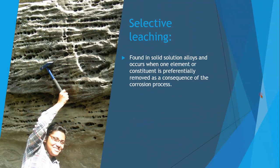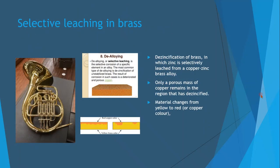Selective leaching is found in solid solution alloys and occurs when one element is preferentially removed during corrosion. A prime example is de-zincification of brass, in which zinc is selectively leached from a copper-zinc brass alloy. Only a porous mass of copper remains in the de-zincified region, and the material changes from yellow to a red or copper colour.